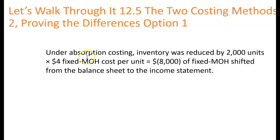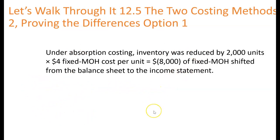Under absorption costing in the second year, inventory was reduced by 2,000 units times $4, or $8,000. That amount was shifted from the balance sheet to the income statement — it comes out of inventory on the balance sheet and moves into cost of goods sold on the income statement.